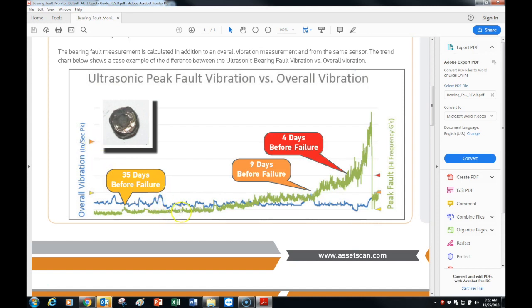And the green line is the ultrasonic measurement, it's a high frequency vibration that's contact based ultrasonic that is 1000 to 25,000 hertz, and its units of G's. The alert limits are set at 6, 12, and 18 G's.